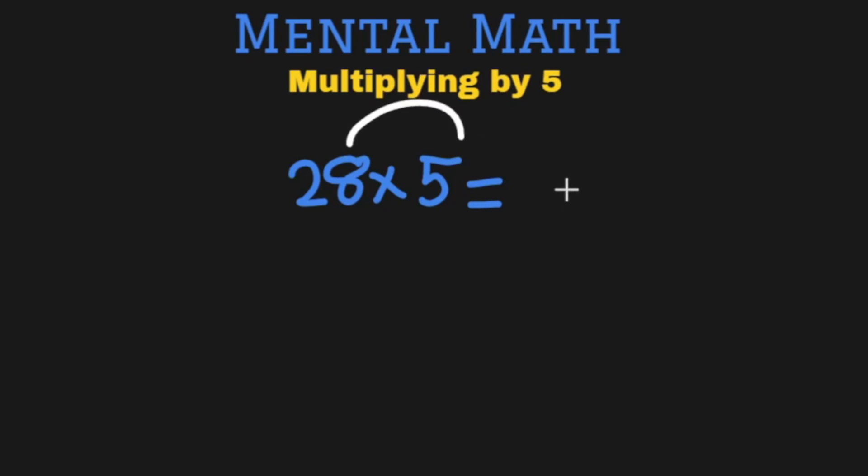I will first multiply 8 by 5 and that will give me 40 and I will remember this 4 from the 40. Then I will multiply 2 by 5 that will give me 10 and I add the 4 to it to get 14. This will become my final answer 140.